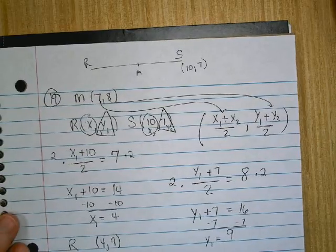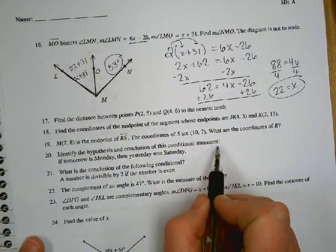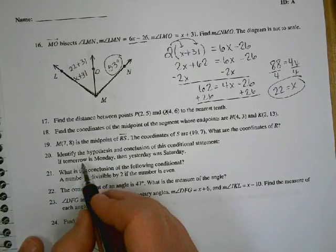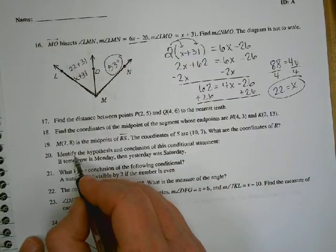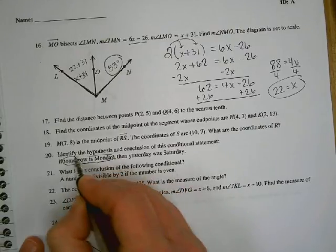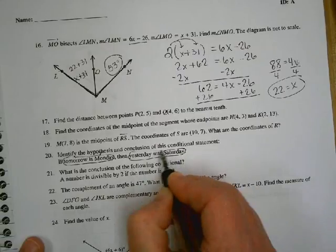Number 20. Identify the hypothesis and the conclusion of this conditional statement. If tomorrow is Monday, then yesterday was Saturday. Tomorrow is Monday is your hypothesis. Yesterday was Saturday is your conclusion.